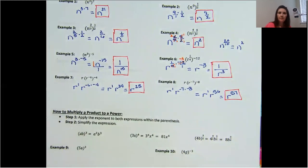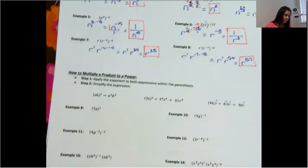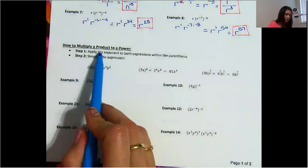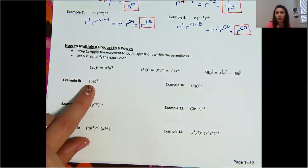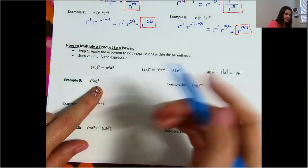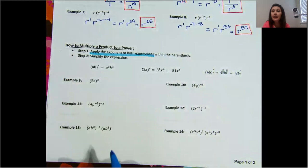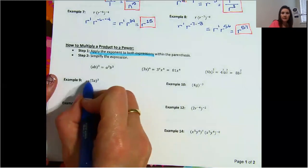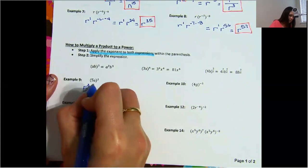First section done. The next section is very similar, except you might have multiple terms within a parenthesis. Let's look at how to multiply a product to a power. In this case, we have the product of 5a and the whole thing is being raised to the power of 3. The key is that you want to apply the exponent to both expressions within that parenthesis, and then you can solve just like we did above. So 3 is going to be applied to both 5 and a.